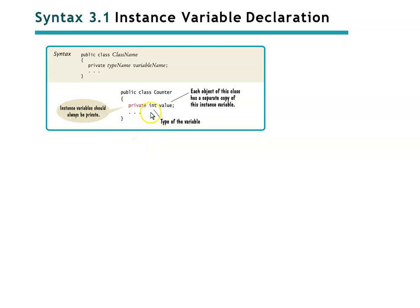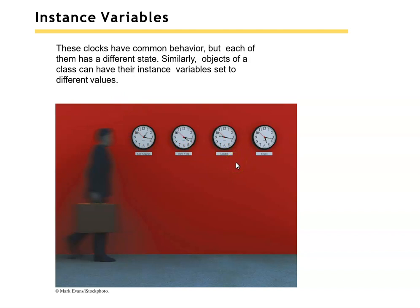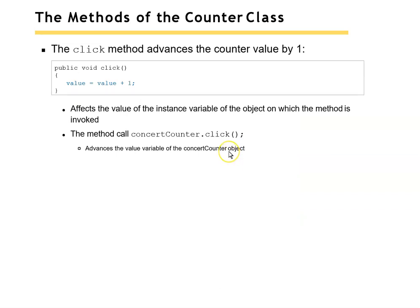You have to give it its type. For example, there are a bunch of clocks — each of them has common behavior but each has a different state. Objects of a class can have their instance variables set to different values. So if we take the counter class, we'd have a click method that increments the value by one. Calling concert counter dot click would update the counter only for the concert counter, not for all the other counters.